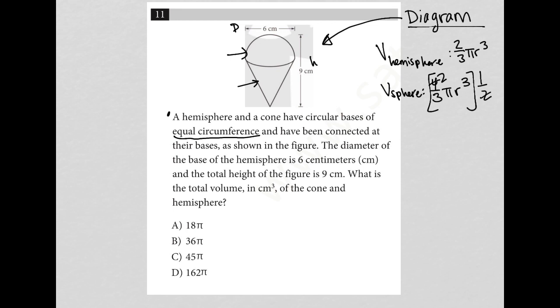So the volume of a hemisphere is going to be 2 thirds pi r cubed. So what's the radius of the hemisphere? Well, I know the diameter is 6, which means the radius, let me just put this dotted line here so I can make it more visually appealing to me. So the radius from the center to the edge would be half of that 6, so it would be 3 centimeters. So I'm going to replace my r.